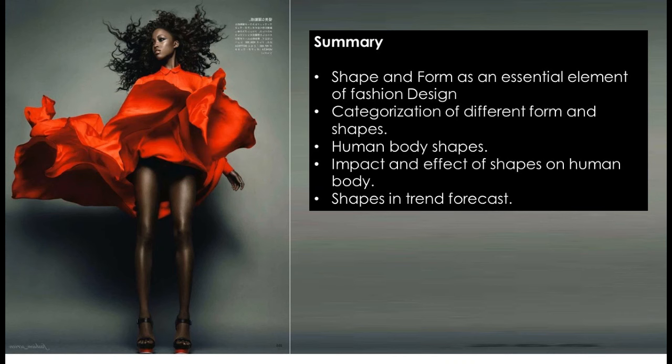Now let's summarize what we learned in this chapter. We learned about shape and form as essential elements of fashion design. Then we categorized different forms and different shapes. We also understood human body shapes and the impact and effect of shapes on the human body. Finally, we understood shapes in trend forecasting.